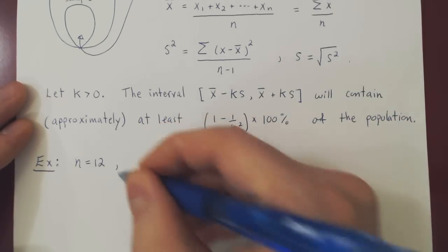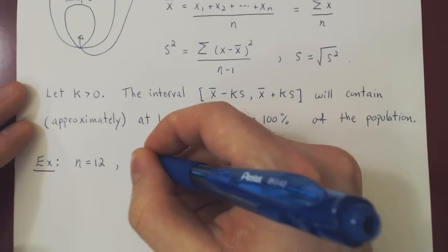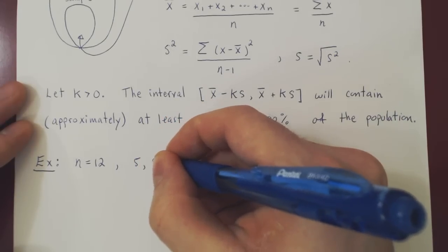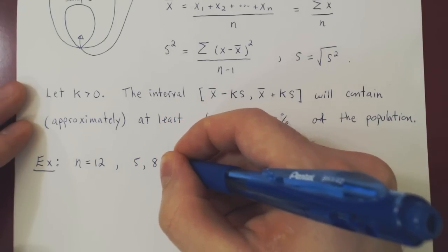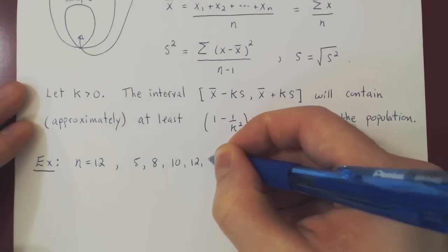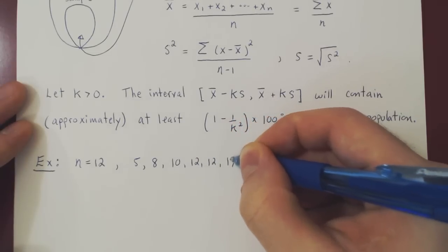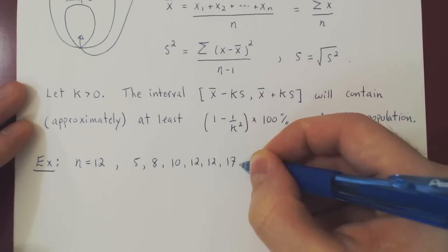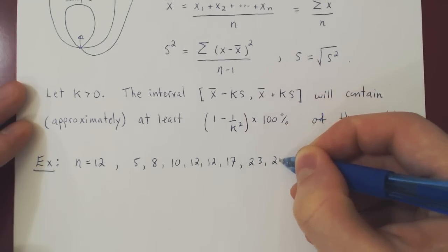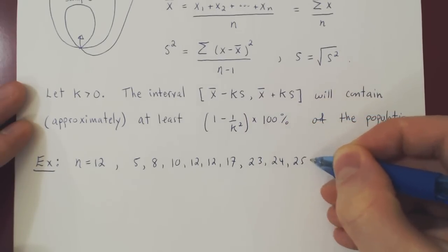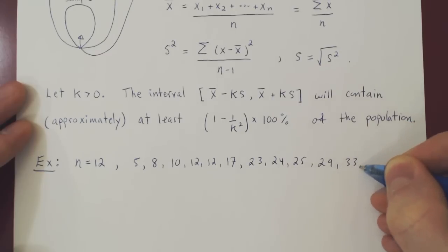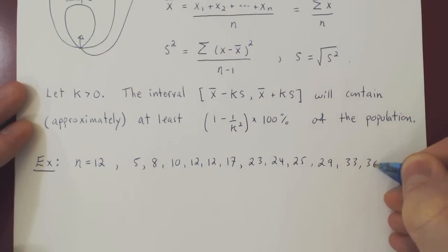Suppose we obtain the following values (in minutes): 5, 8, 10, 12, 12, 17, 23, 24, 25, 29, 33, and 36 minutes.